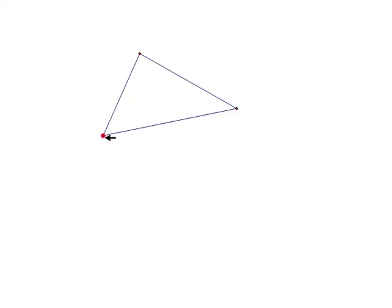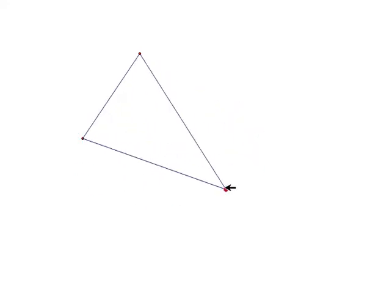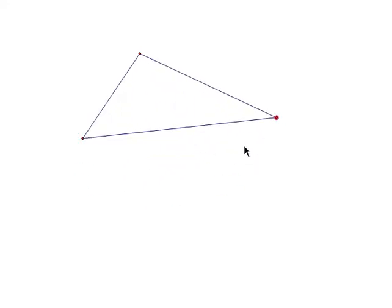In Geometer's Sketchpad, we're starting out with just a random triangle. This triangle can be moved around to make any triangle that we want. Now what I'm going to do is construct the angle bisector for each of the three angles. Here we have the three angle bisectors drawn in.